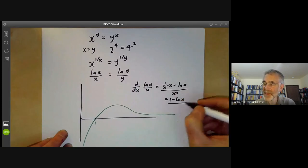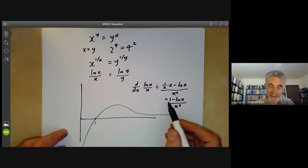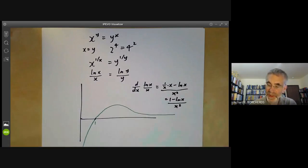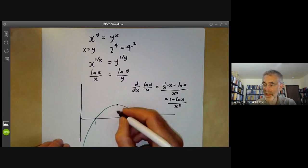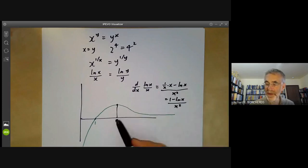So this vanishes when log of x is equal to one. In other words, when x is equal to e. So this is the point where x is equal to e. And you see this derivative is negative for x bigger than e, so it decreases all the way here. And it's positive for x less than e, so the slope is always positive there.